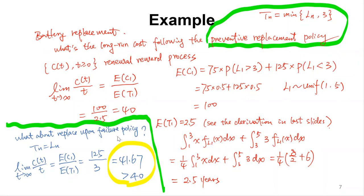What about replacing only upon failure? In that case, all replacements are unplanned, so the cost per cycle is always $125. The expected inter-event time is 3 — because the lifetime is uniformly distributed between 1 and 5, with mean 3. So the long-run cost rate is 125 divided by 3, which equals approximately 41.67, which is much higher than the preventive replacement policy.